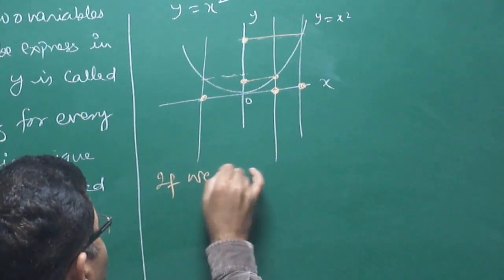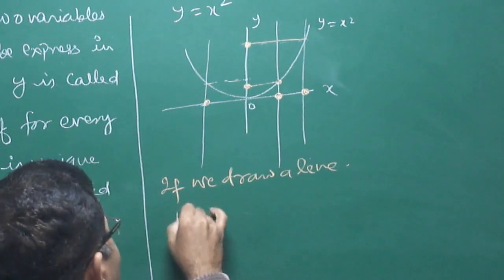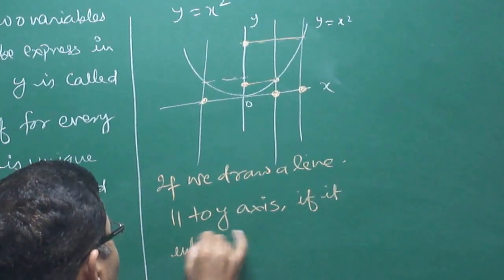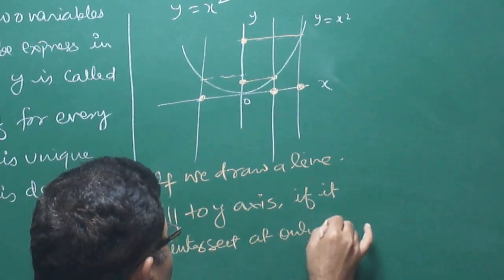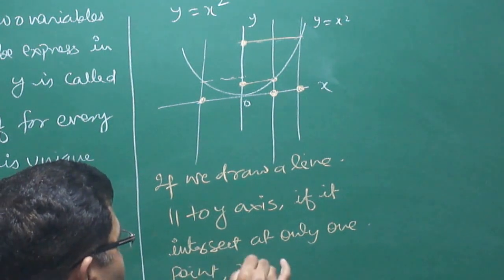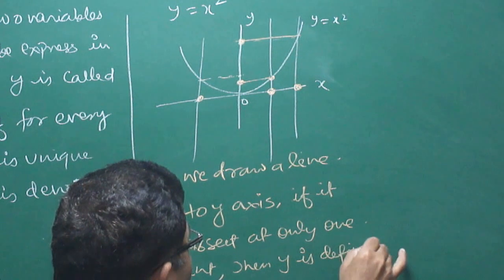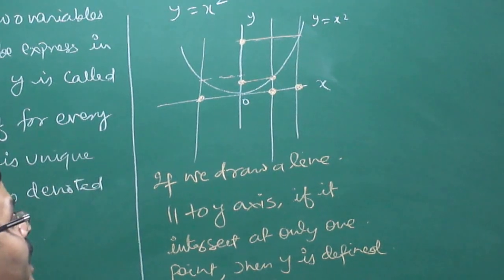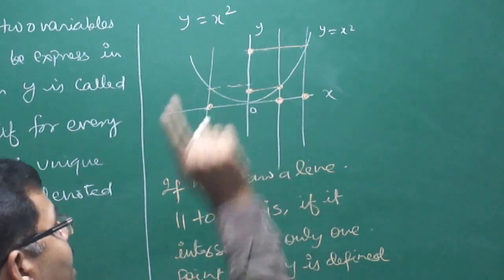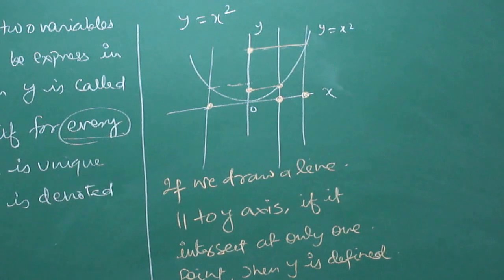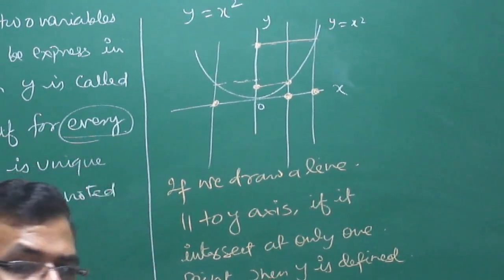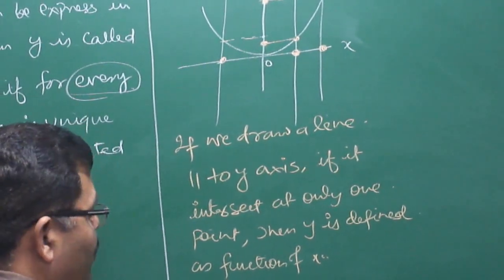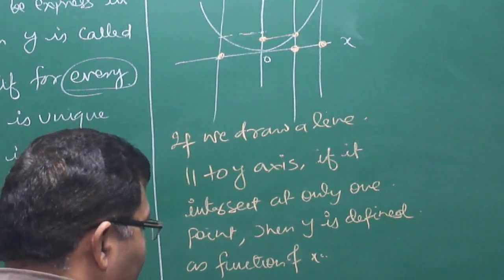If we draw a line parallel to the y-axis and it intersects the graph at only one point, then y is defined as a function of x. This is the vertical line test.